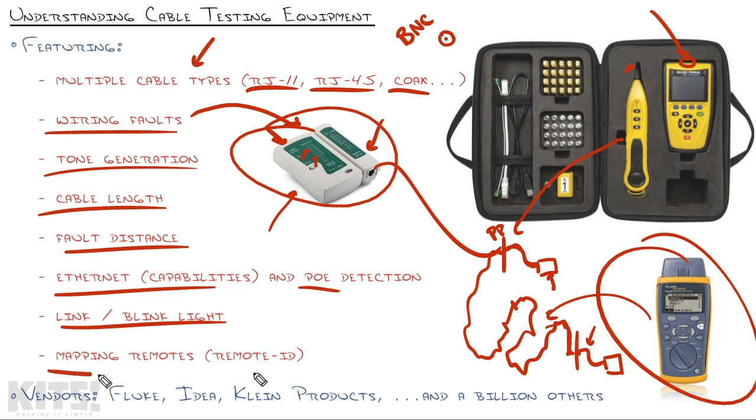Some of the cable testers include mapping remotes such as this. Each one of these little RJ45 connectors - that's what's on the other end of these in the foam - can be plugged into the wall, and each one has a code like this is one, two, three, four. So you can go around an office that you have yet to map, plug them into the wall all over the place, and then go to the patch panel and plug this in to each one of the patch panel ports, and it will tell you what connector is plugged into the other side. That can hugely increase your speed of mapping out a new building.